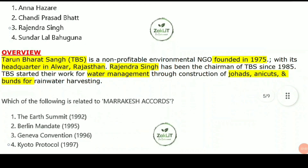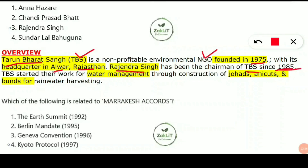Tarun Bharat Sangh (TBS) is a non-profit environmental NGO founded in 1975, headquartered in Alwar, Rajasthan. Rajendra Singh has been the chairman of TBS since 1985. TBS started their work for water management through the construction of johads, anicut, and bunds for rainwater harvesting, in order to store and conserve water through their water management program.